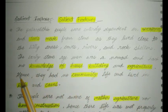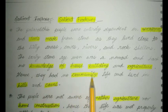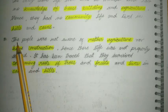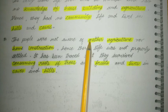The early Stone Age man was a nomad and had no knowledge of house building and agriculture. Hence, they had no community life and lived in hills and caves. The people were not aware of agriculture nor home construction.